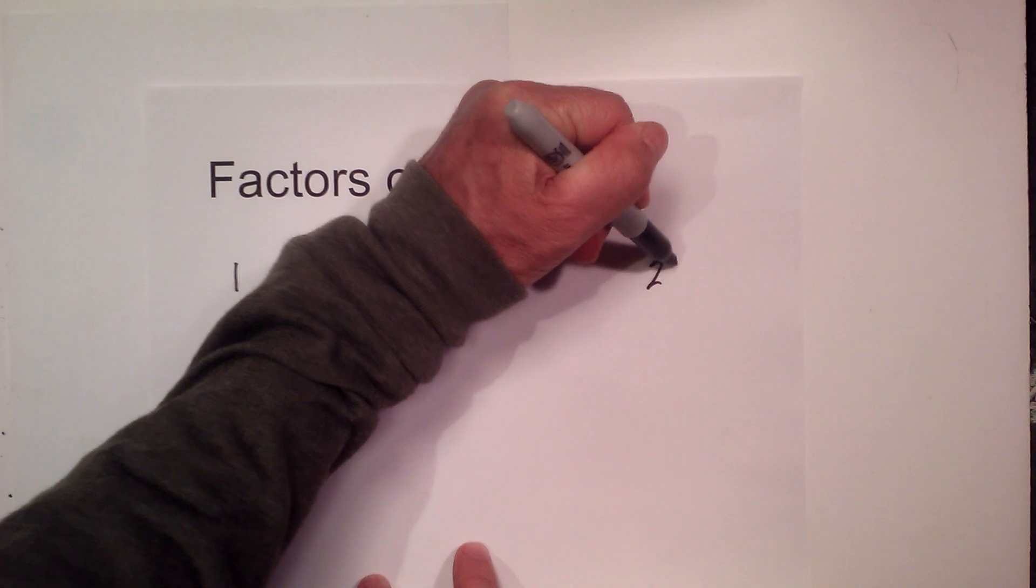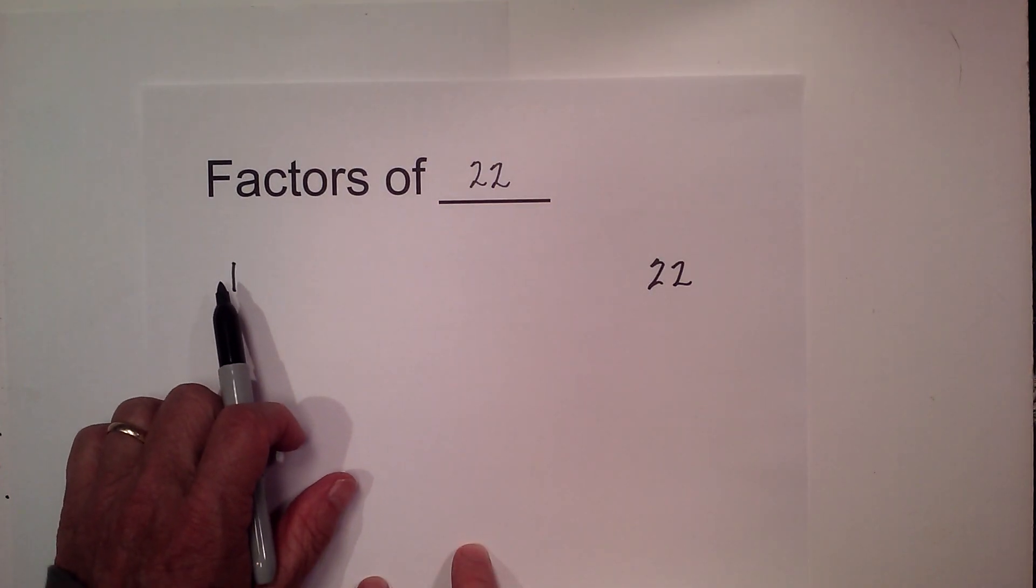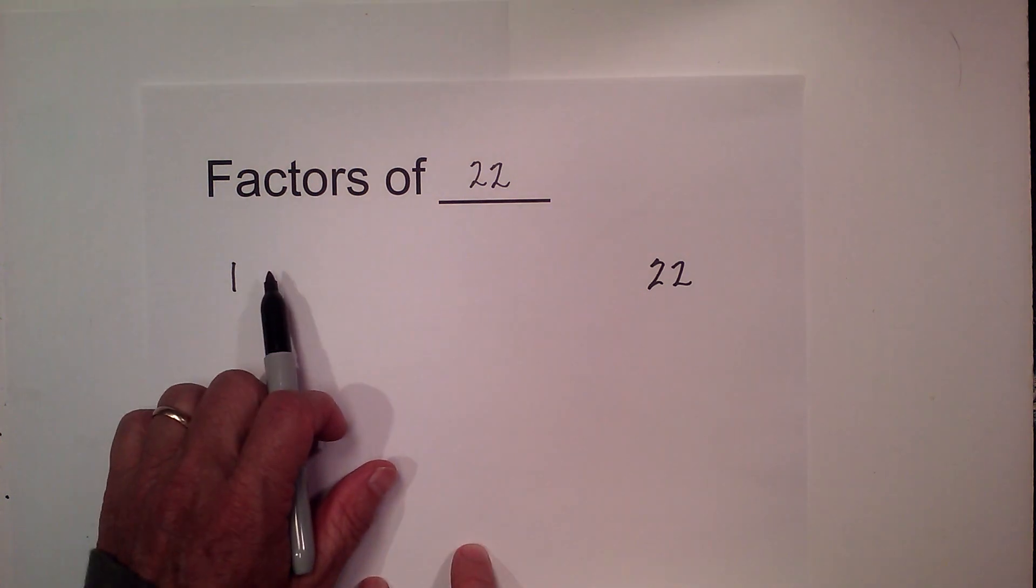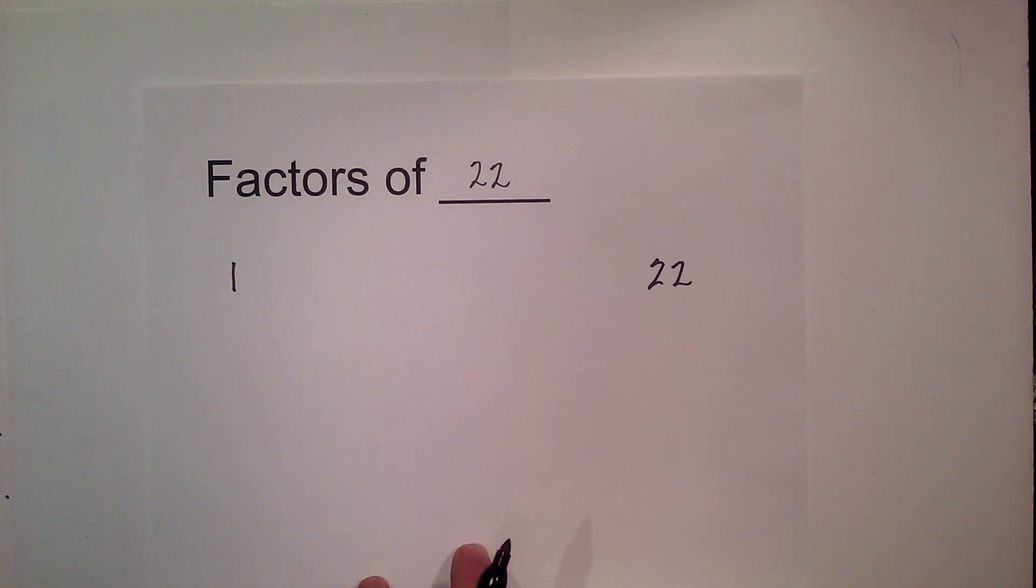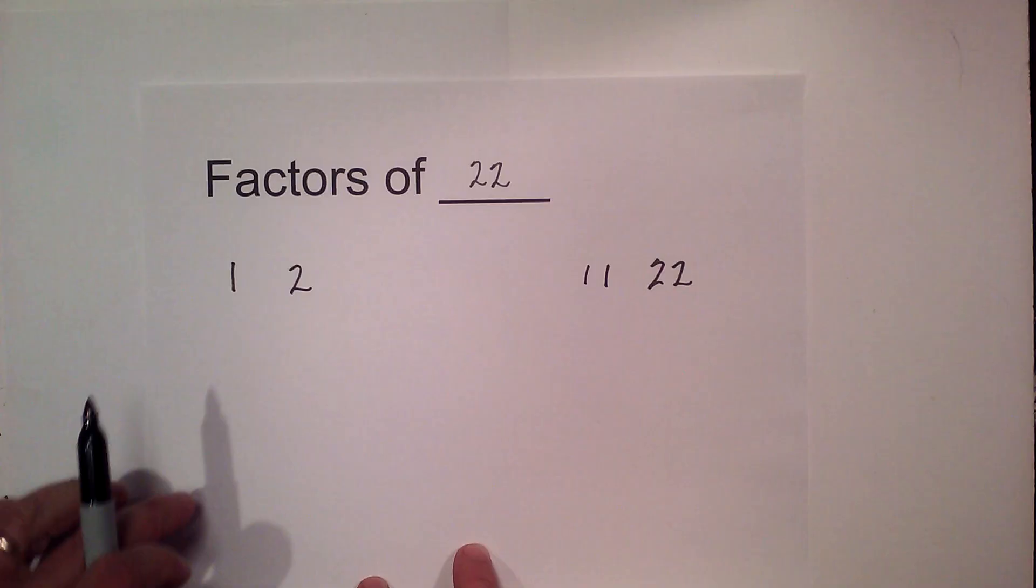22 is a composite number, so it has some factors. I like to find all the factors starting with 1 times 22, finding the numbers that multiply together in pairs to equal 22. Well, there's not many of them. 2 times 11 equals 22.